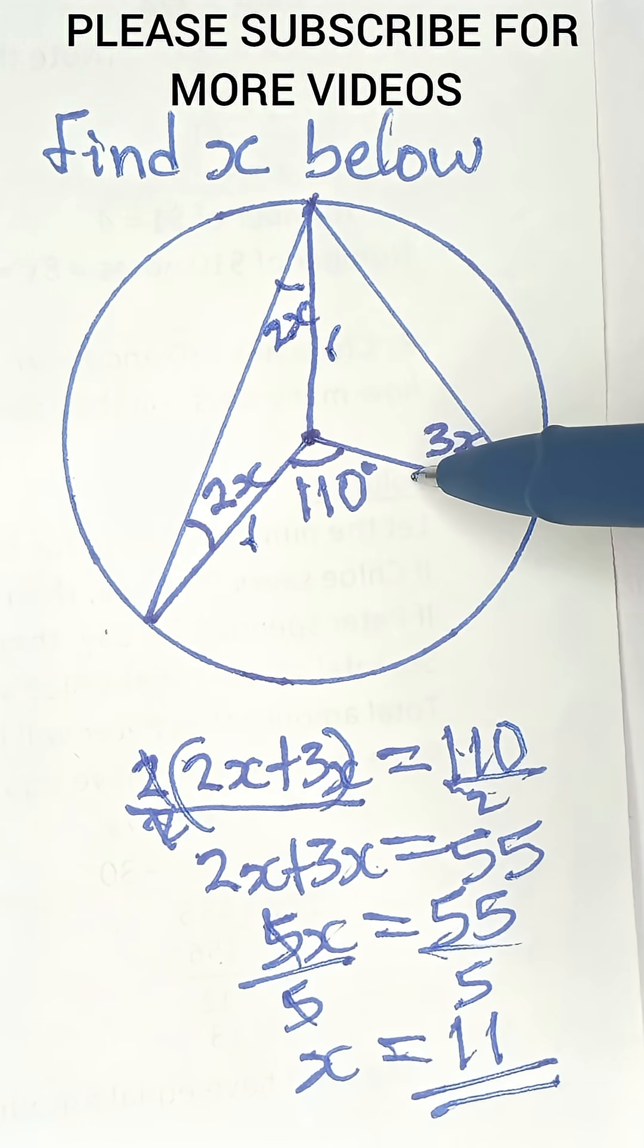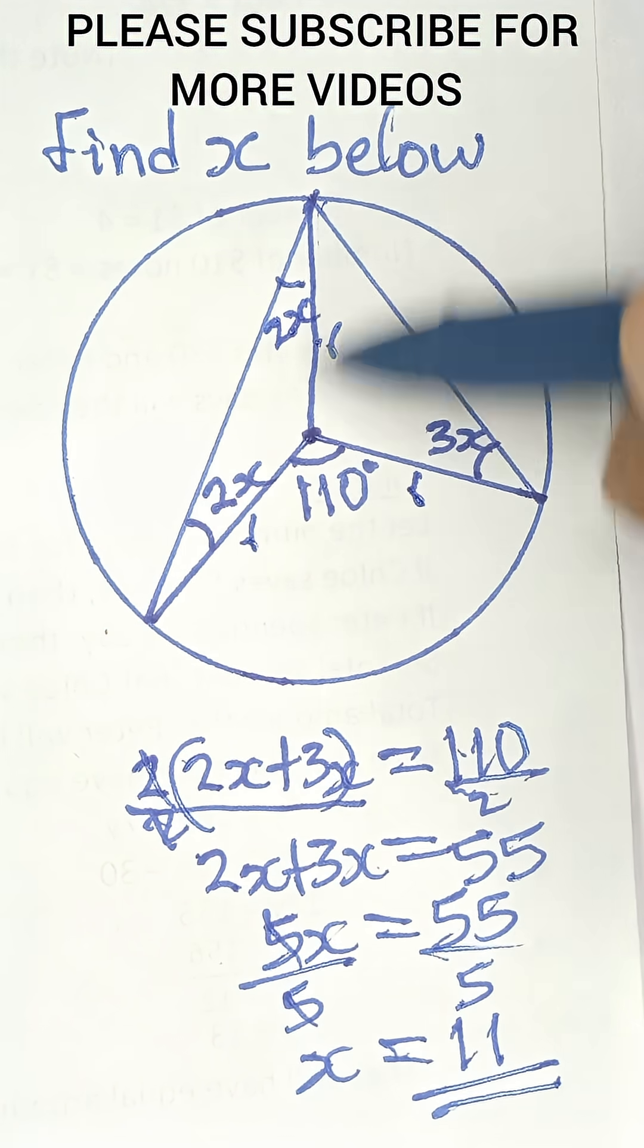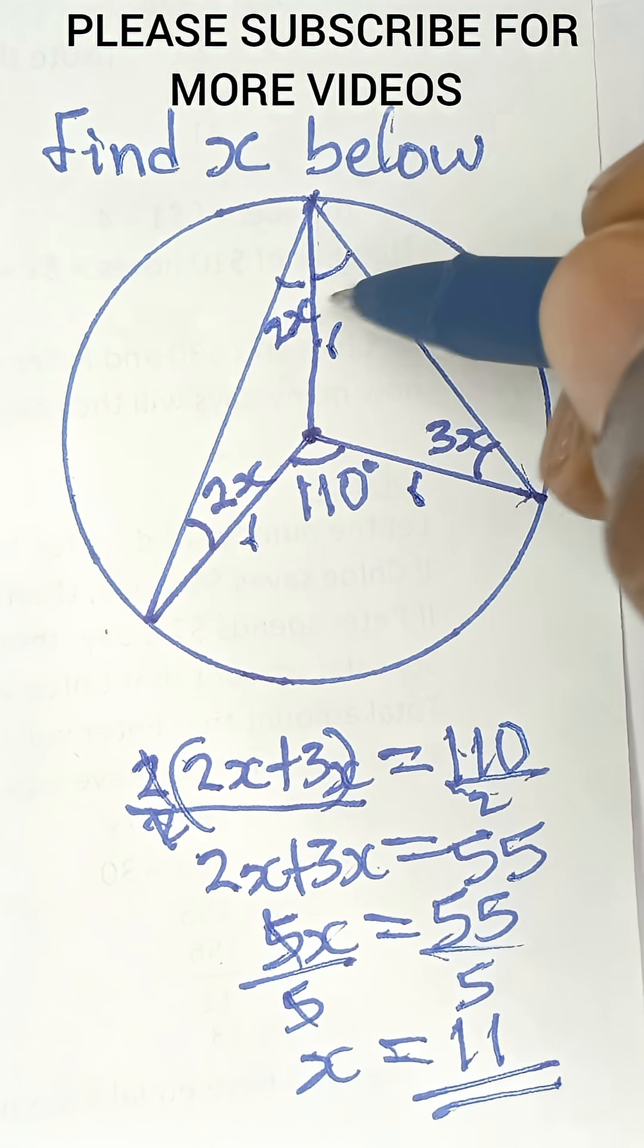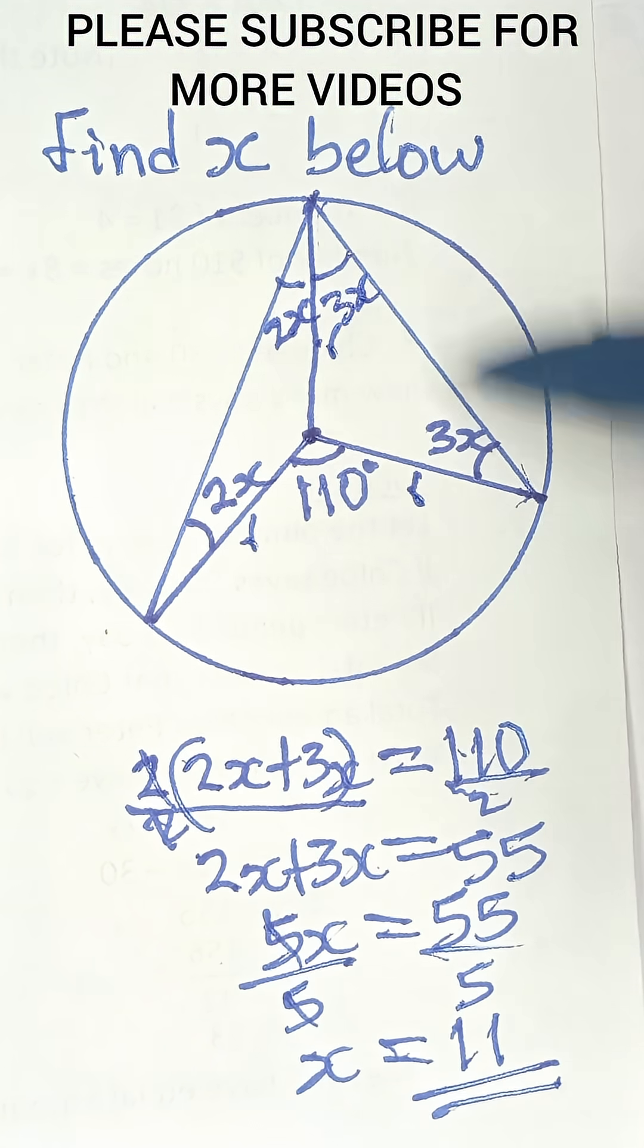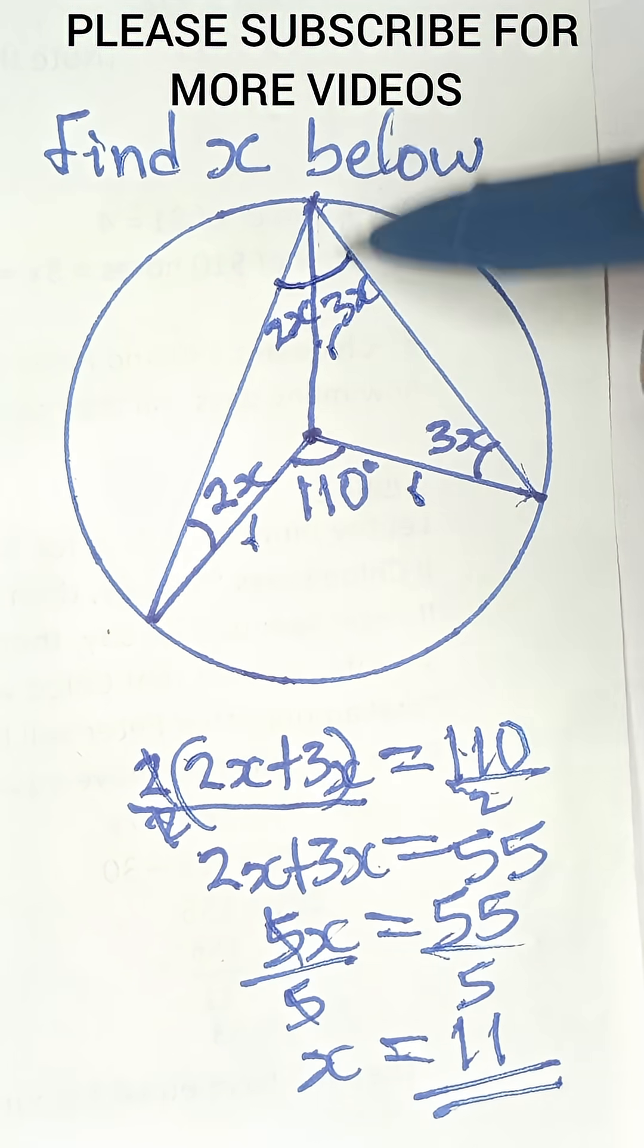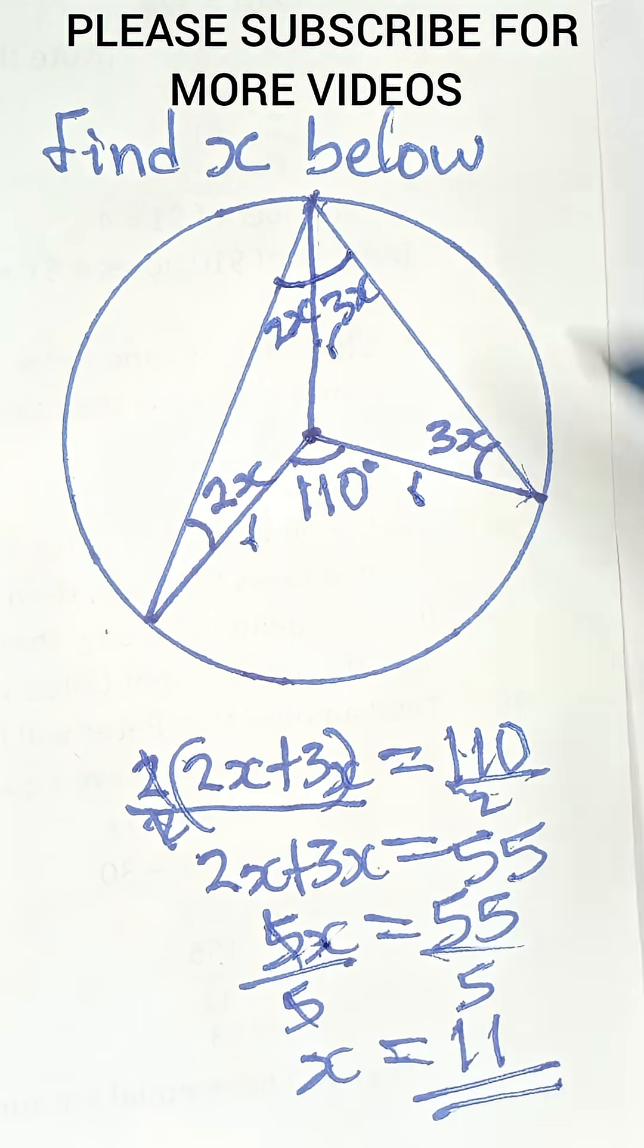And this is a radius, and this is also a radius, so this is also an isosceles triangle, where this is 3x. The base angles are the same, so 2x plus 3x is the 5x that we got here.